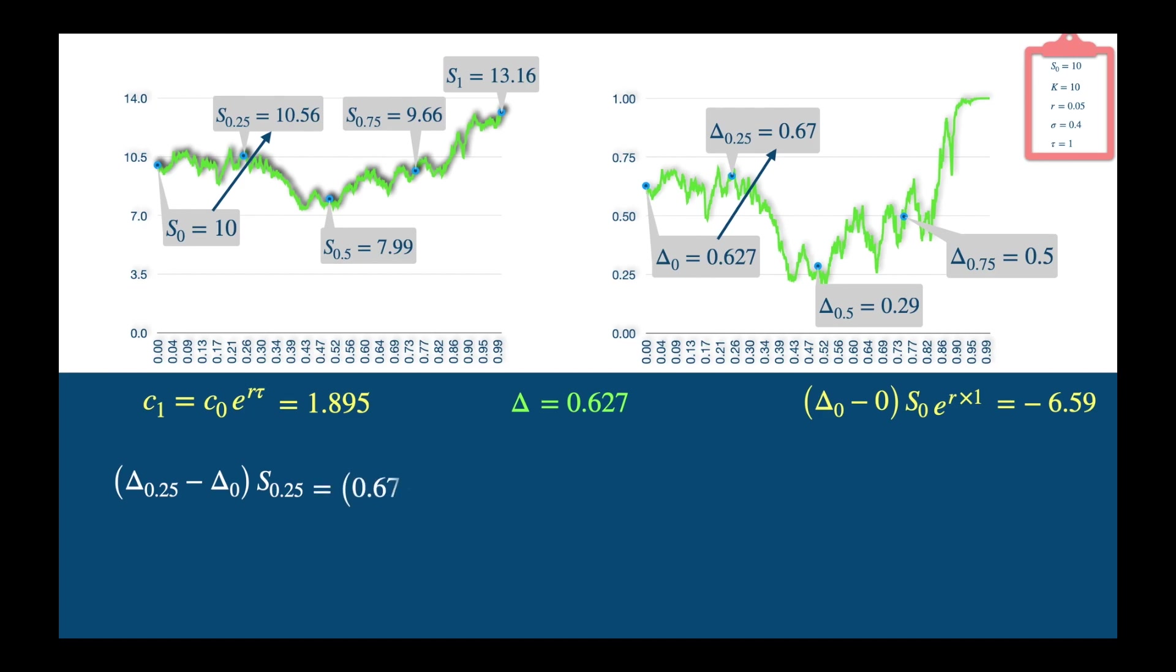Essentially, we are increasing delta from 0.627 to 0.67 at the price of 10.56. The cost comes out to be 0.454, and we borrow this from the bank at the bank rate for the remaining maturity of the option, which is now 3 quarters, and 3 quarters is 0.75. R is again 5%. And we will have to repay this amount, so we change the sign to negative, and this will evaluate to 0.471. And our holding of stock has now increased to 0.67.